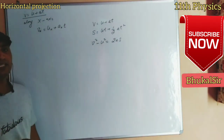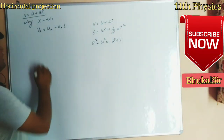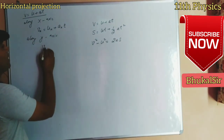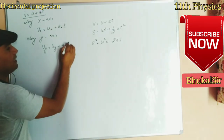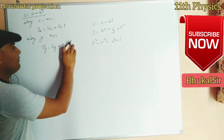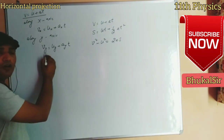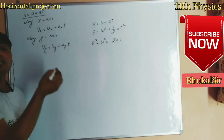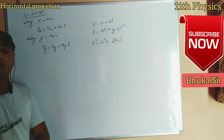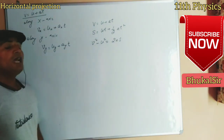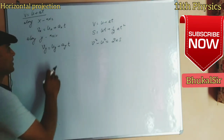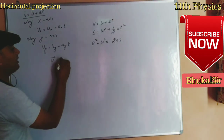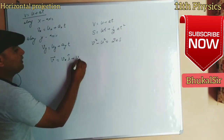Along the y-axis, this equation is written as Vy = Uy + Ay·t, where Vy is the final velocity of the object along the y-axis, Uy is the initial velocity along the y-axis, and Ay is the acceleration along the y-axis. Now, velocity is a vector quantity, so in vector form it can be written as Vx·î + Vy·ĵ.